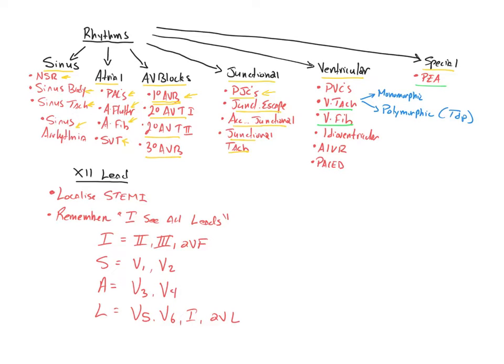So remember, your normal rate when talking about a junctional escape is going to be the normal automaticity for the junction is about 40 to 60. If the junctional rhythm is greater than 60, we call that an accelerated junctional rhythm. And then if it is greater than 100, we would call that junctional tachycardia.